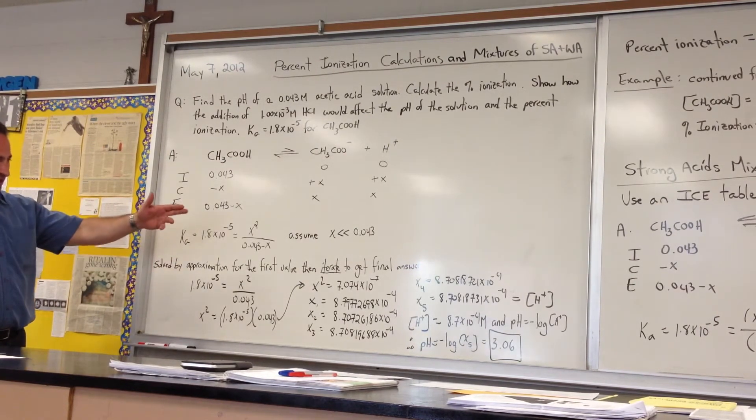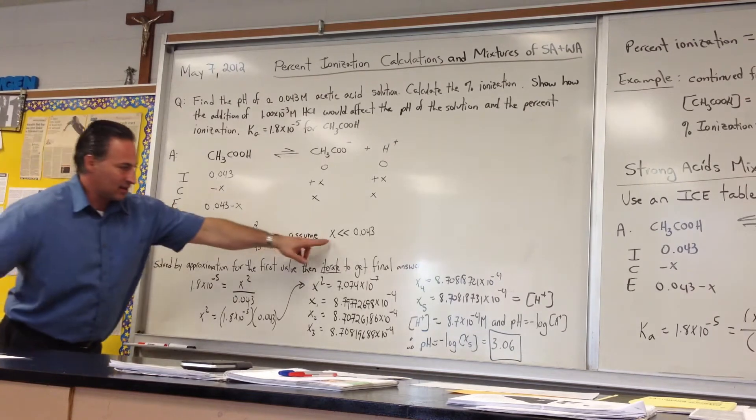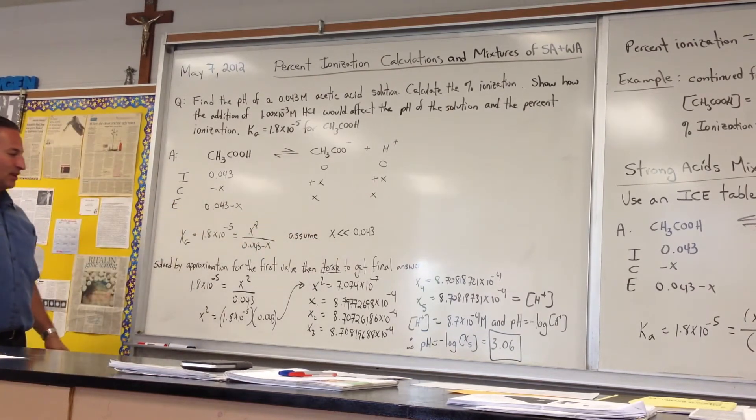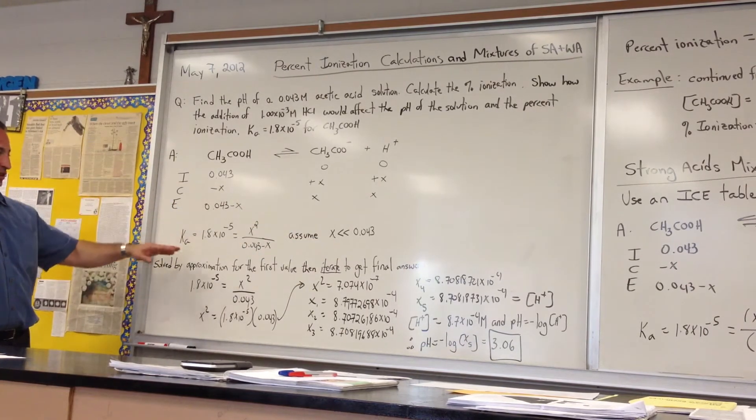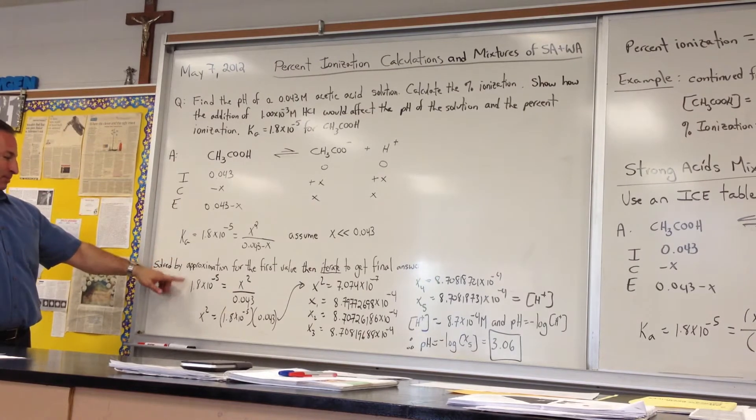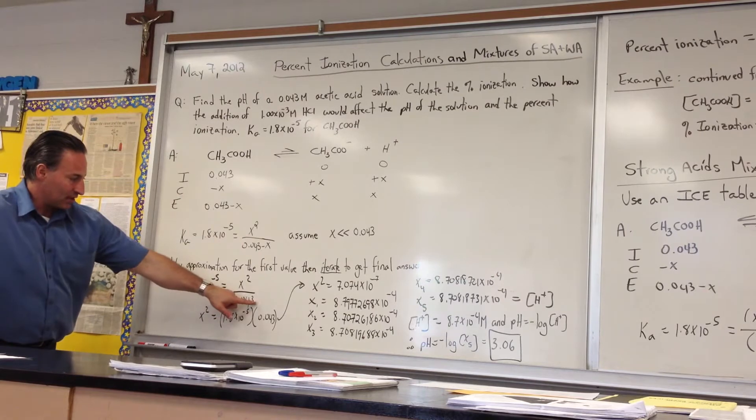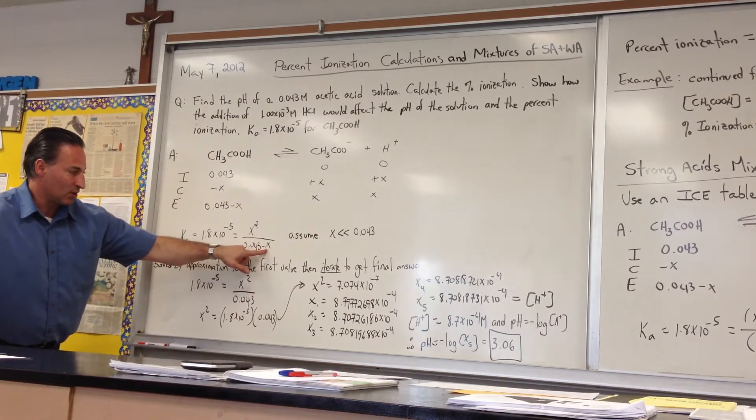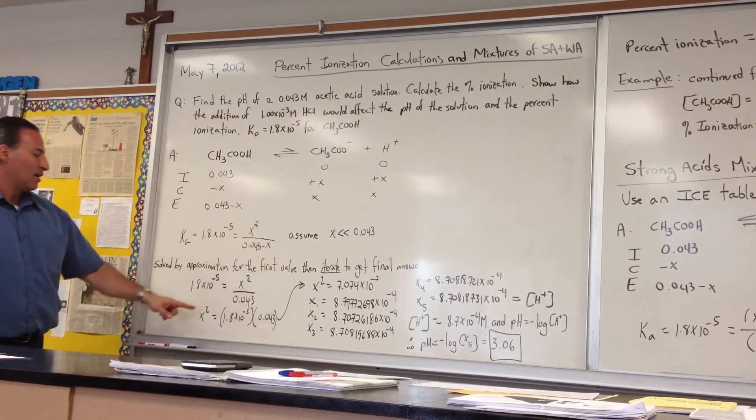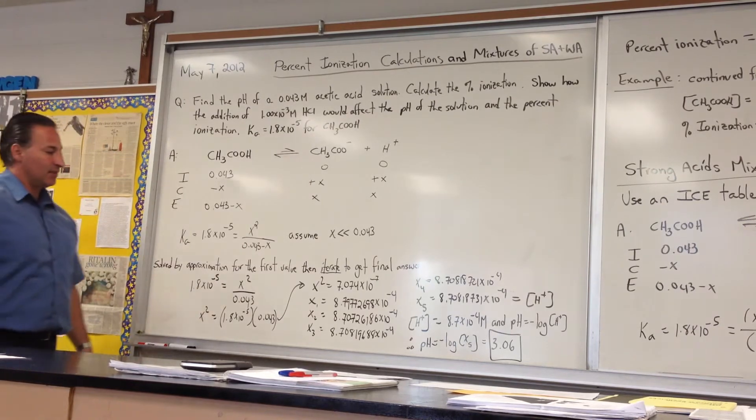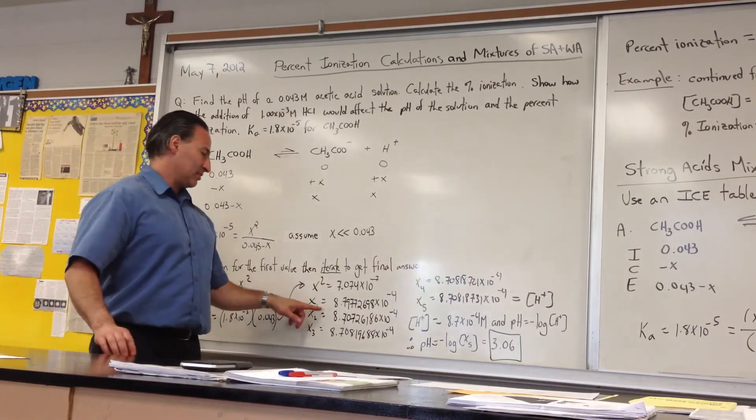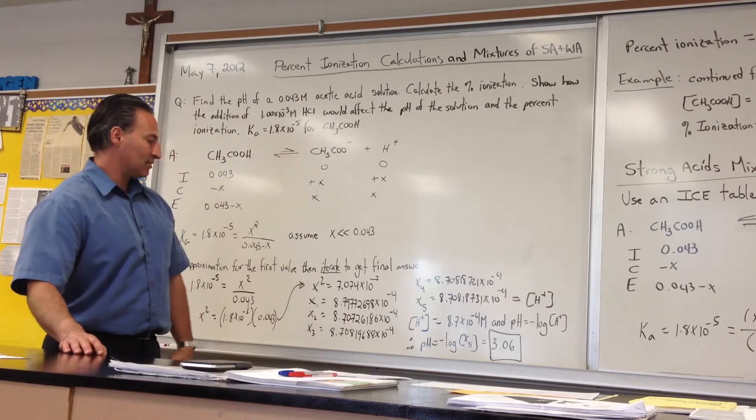So I start - as it turns out, in this case it is true, so it won't really affect the answer if you stop at the first step. But we rewrite the equilibrium equation with the minus X part missing, because we've assumed it's so small it doesn't affect the number. We solve for X and find the first value is 8.79×10⁻⁴.